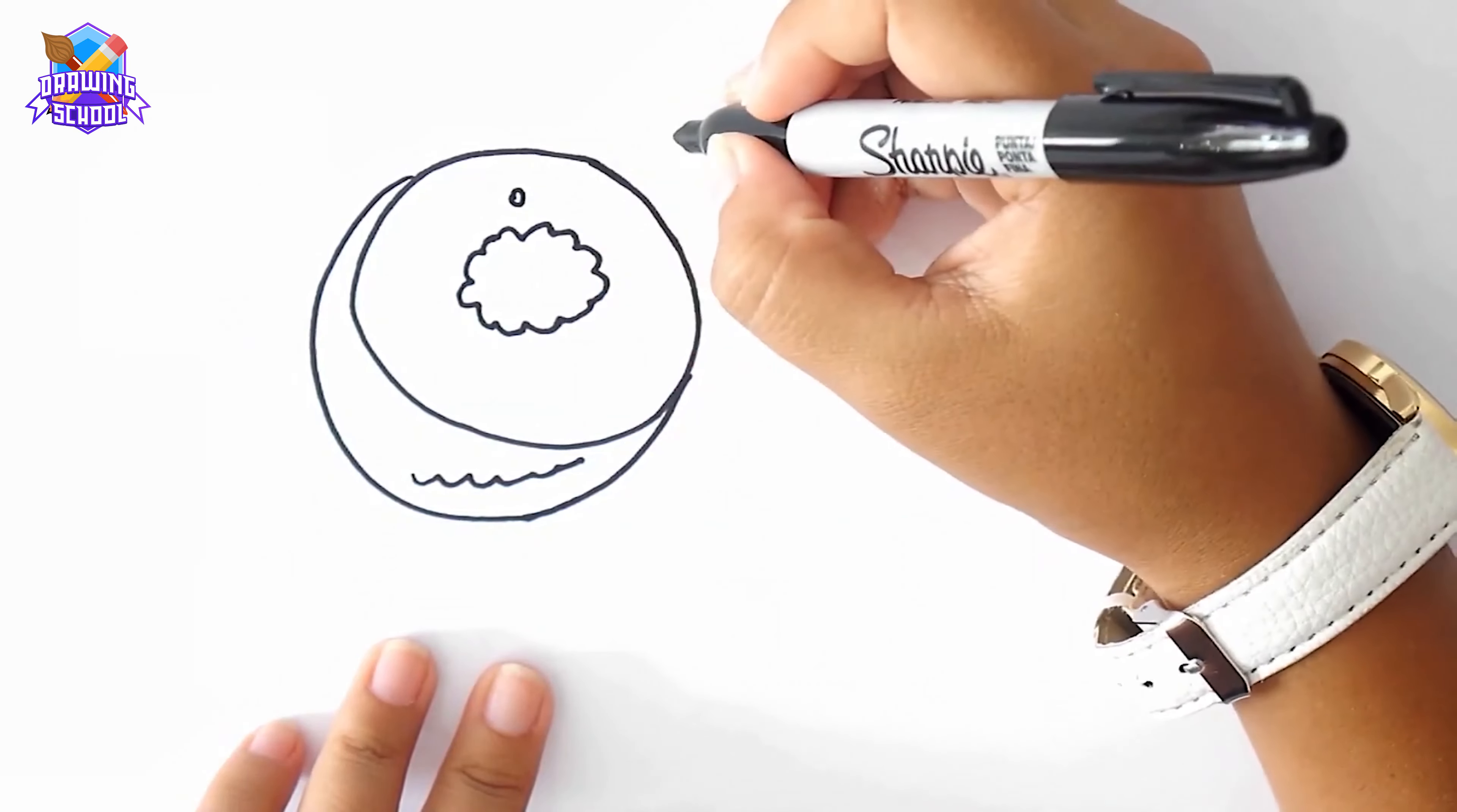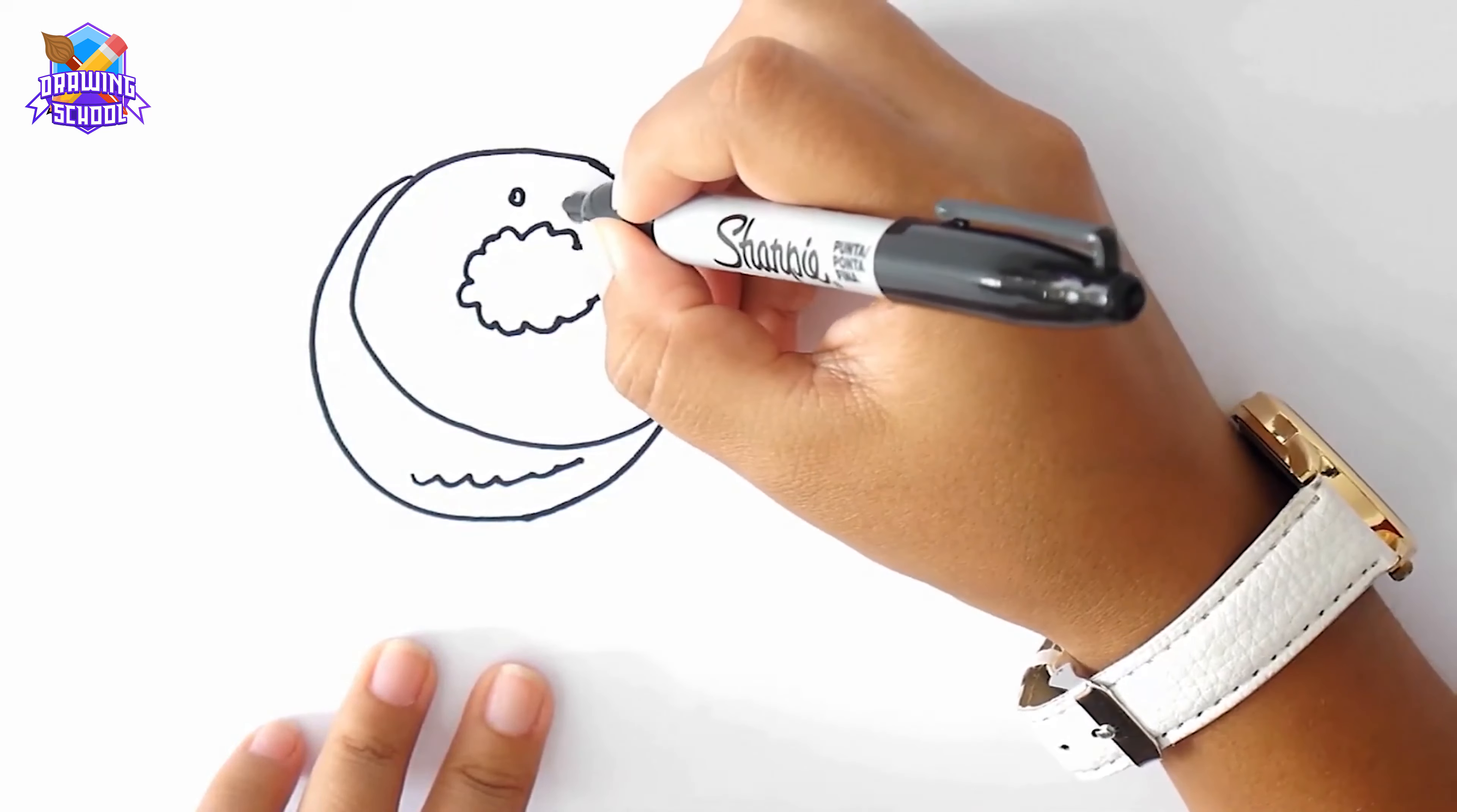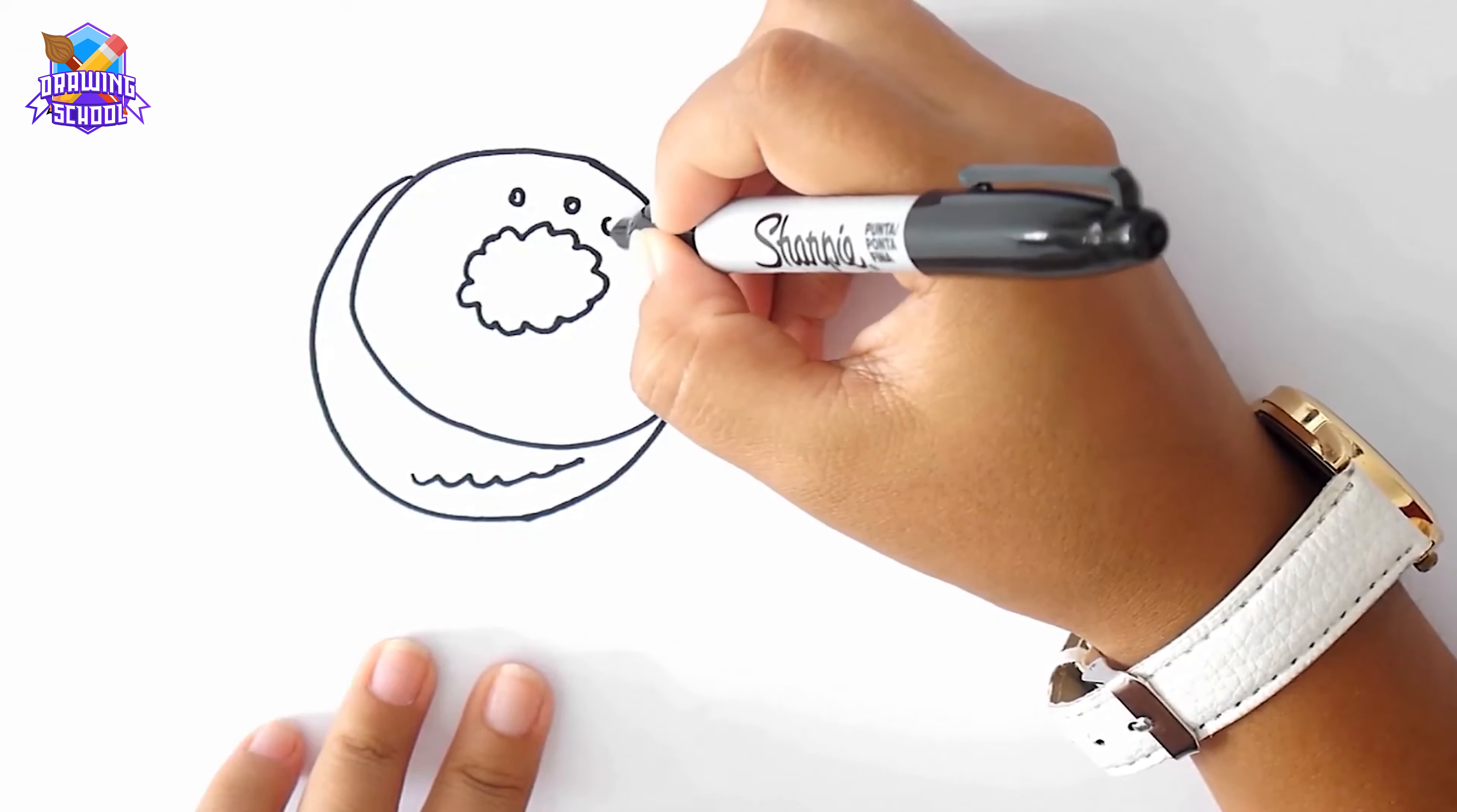Once we have this done, I'm going to start adding seeds, drawing little circles all around the fruit.